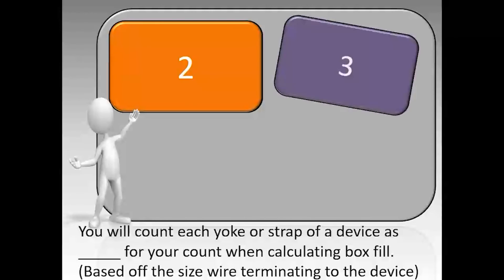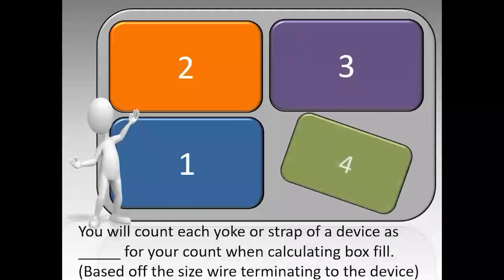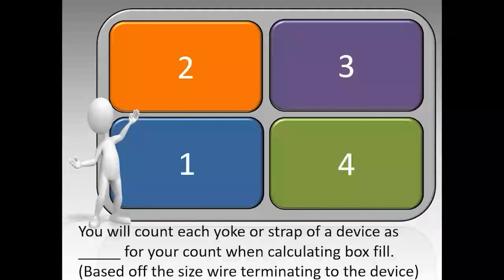You will count each yoke or strap of a device as two conductors for your count when calculating box fill, and this is based off the largest size wire terminating to the device. So if you have a switch with 12-gauge wire, it counts as a number 12. If in the same box you have a switch with 14-gauge wire, that switch would count as 14s and the first switch as 12s. Each yoke or strap counts as two based off the size wire terminating to the device.